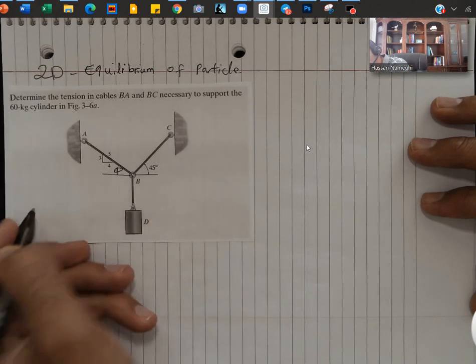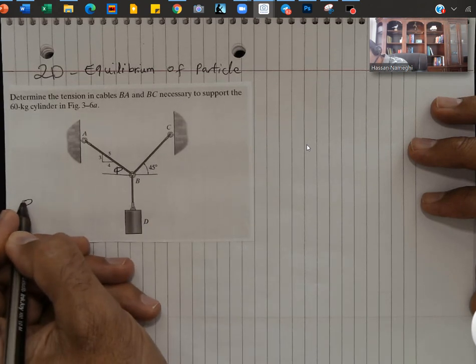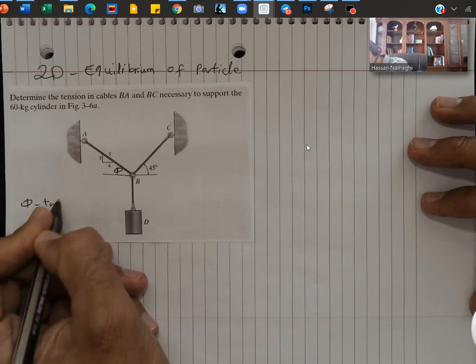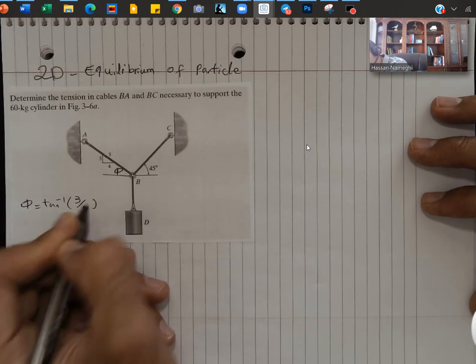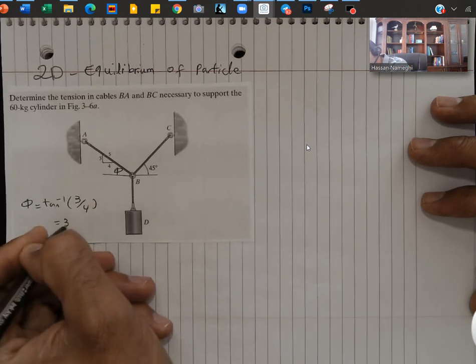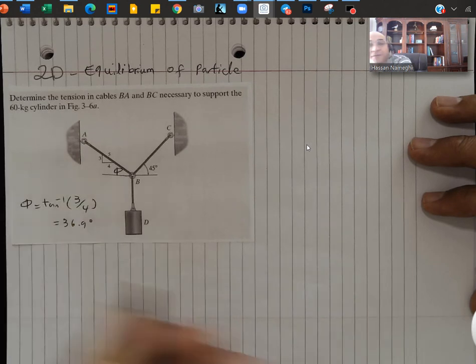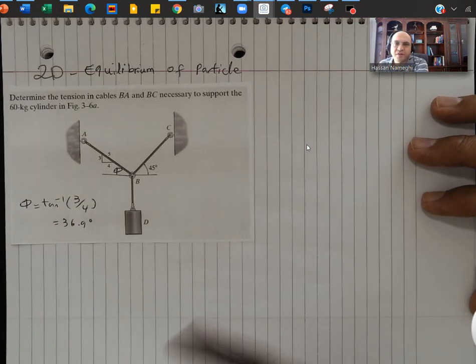I'm going to call this angle phi and I do know that phi is equal to tan inverse of 3 over 4. If I put it in my calculator, I'm going to get 36.9 degrees. So in the first step I found the angle.